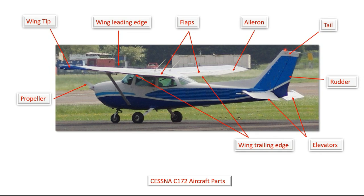Just as we have a leading edge, we also have a trailing edge of the wing. When the air hits the leading edge of the wing it travels above the top and underneath — where we get lift — and it meets at the back, and where the air meets is the wing trailing edge.